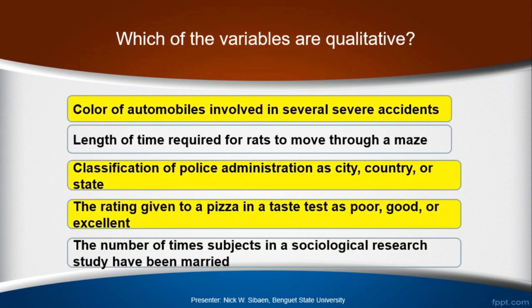The qualitative variables are the first, third, and fourth. Color is qualitative. Length is not qualitative — it is measured, so we associate numbers with it. Classification of police administration as city, country, and state — these are labels, so they are qualitative. Rating of a pizza as poor, good, or excellent are also labels, so qualitative. The number of times subjects have been married has the clue word 'number,' meaning it is associated with numbers, making it quantitative, not qualitative.